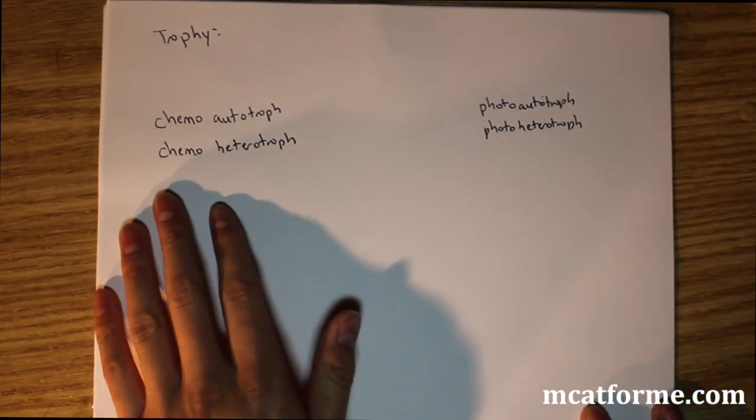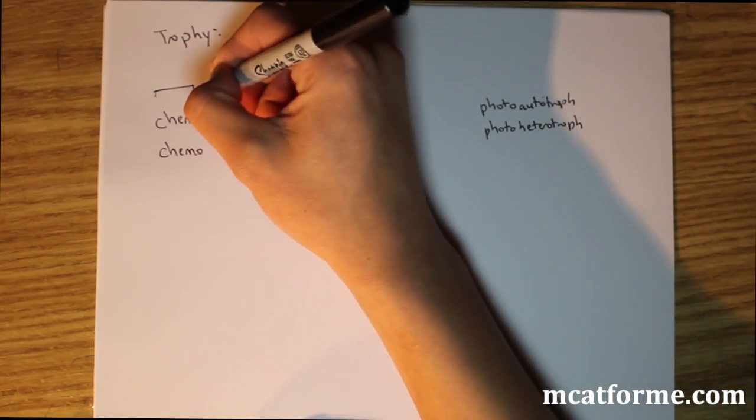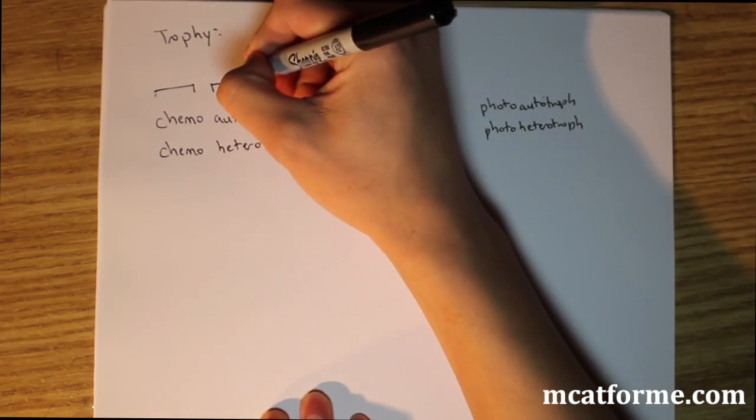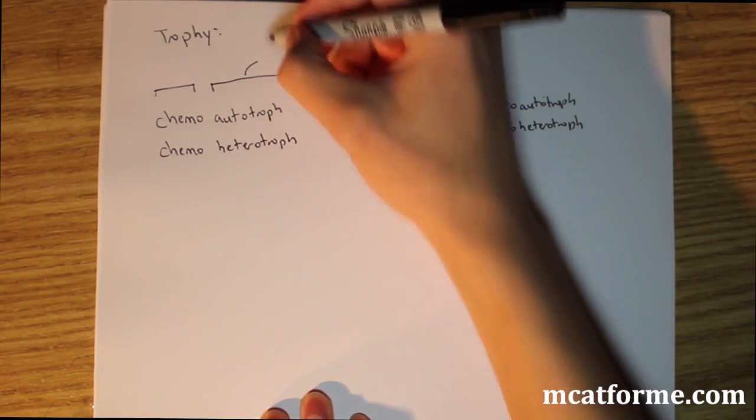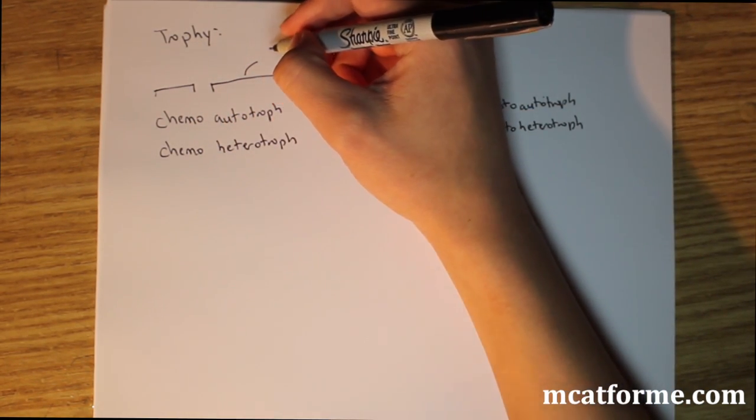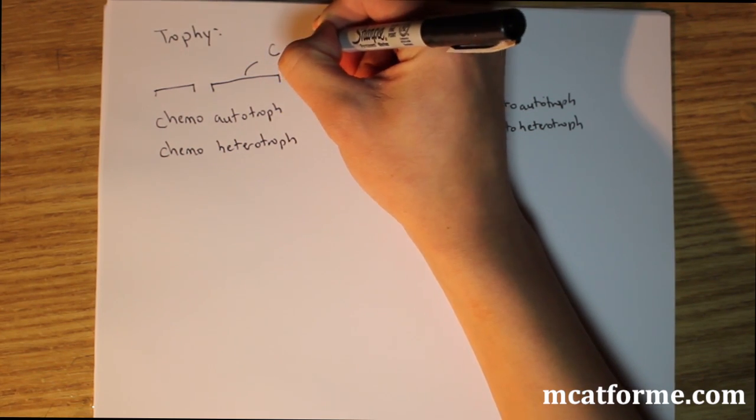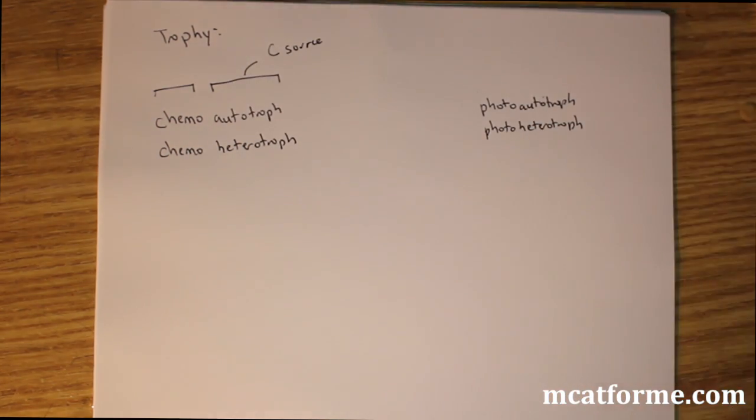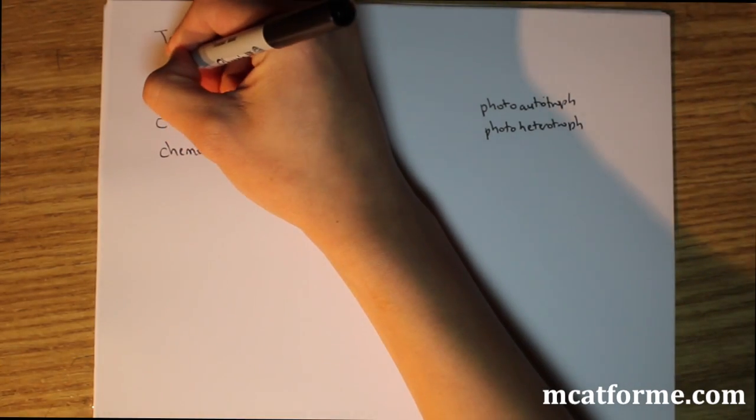So the next thing we're going to be looking at is just trophia. How do these organisms eat? So they're broken up into two parts. It's like chemo, autotroph, photo, autotroph. I'll break it down in the first part and then the second part. So the autotroph part or the heterotroph is how we get our carbon, our carbon source. And this chemo and this photo is how we get our energy source.